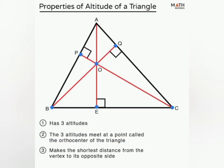Properties of altitude of a triangle: A triangle has three altitudes. These three altitudes meet at a point called the orthocenter of the triangle.